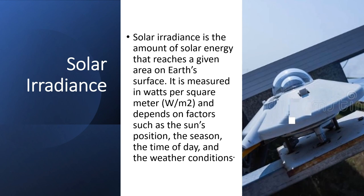Solar irradiance is the amount of solar energy that reaches a given area on Earth's surface. It is measured in watts per square meter and depends on factors such as the sun's position, the season, the time of day, and the weather conditions.